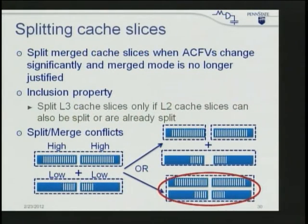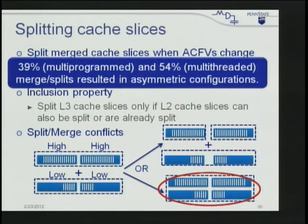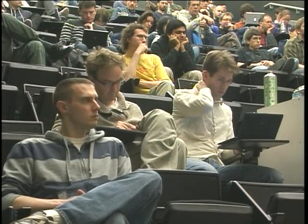We use a merge-aggressive rather than split-aggressive approach. It turns out 39% of multi-program configurations and 54% of multi-threaded merge/split configurations result in asymmetric configurations — pretty interesting numbers suggesting the ideal cache topology is asymmetric, not something found in commercial parts today.